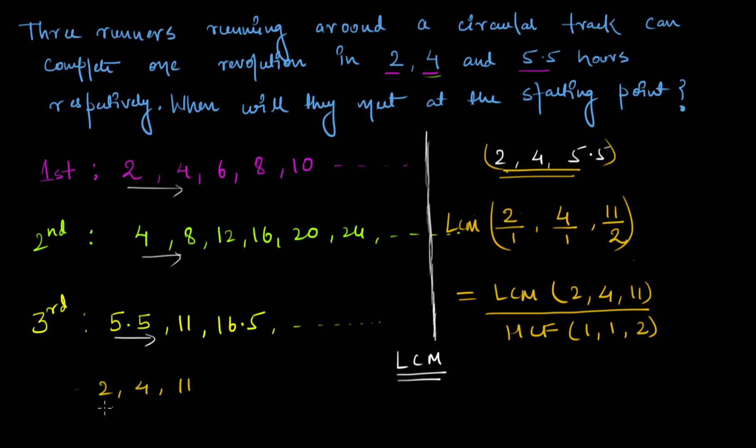We have 2, 4, and 11. 2 is a prime number, 4 can be written as 2 times 2, and 11 is again a prime. So the LCM becomes 2 times 2 times 11, that is 44. This equals 44 divided by HCF of 1, 1, and 2. HCF of 1 and 2 is 1 itself, so this gives me 44.